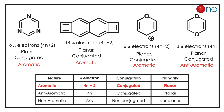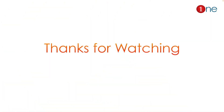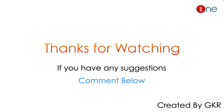The fourth one is peculiar — it has 8 π electrons, is planar and conjugated, so it is anti-aromatic. The answer is the fourth compound, which is anti-aromatic. The key concept to learn here is that the Hückel rule decides the aromaticity of a compound. That's all from this video — thanks for watching.